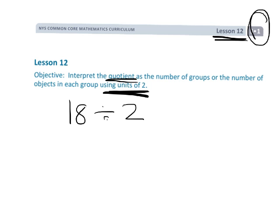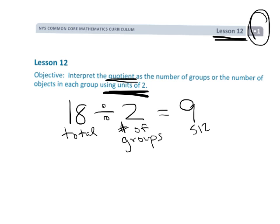So if we talk about 18 divided by 2, the answer is 9. Now, this 2 could mean the number of groups, and 18 is the total, which would mean 9 is the size of each group.